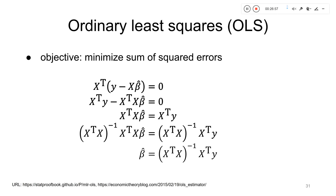A student asks what 'hat' means: it denotes an estimated value. So beta-hat is the estimated value of beta; X·beta-hat is the modeled signal (what the model predicts); and y minus X·beta-hat is epsilon-hat, the estimated noise term.